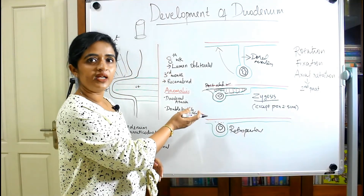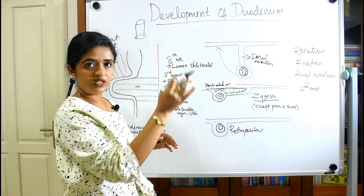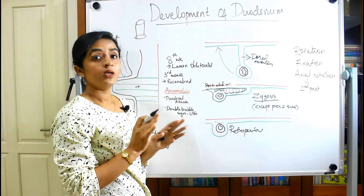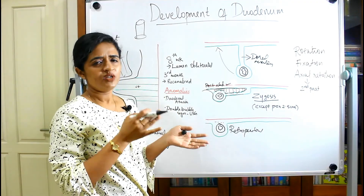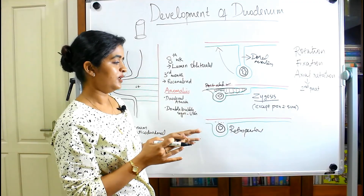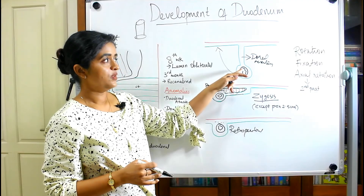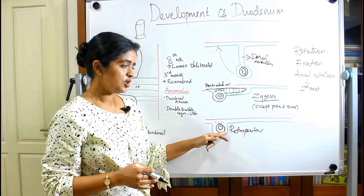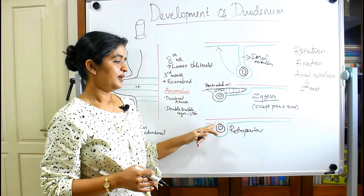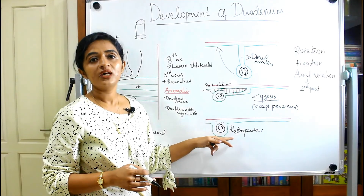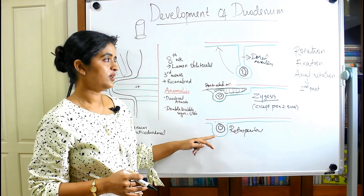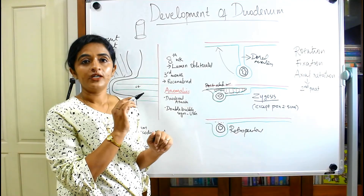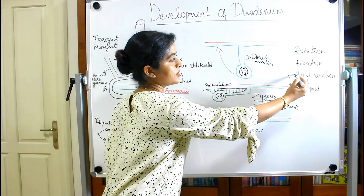Retroperitoneal means the structure is now behind the peritoneum. Previously the duodenum had peritoneum all around it, but after the process of zygosis, only a portion has a peritoneal relation and a portion is free of peritoneal covering. That is why we call it retroperitoneal — it is behind the peritoneum. This describes the peritoneal relation of the duodenum after fixation.